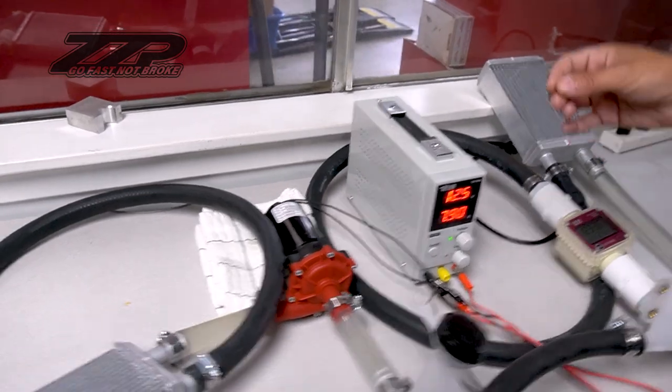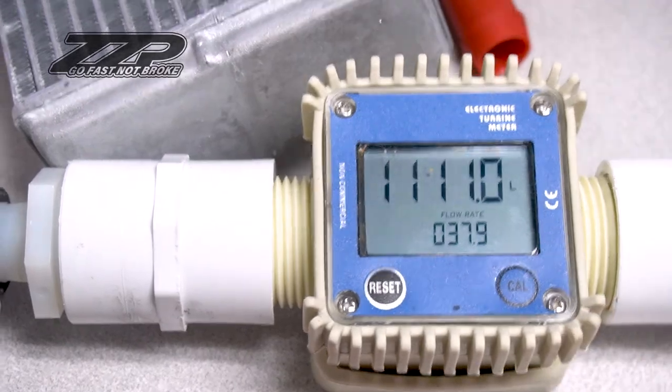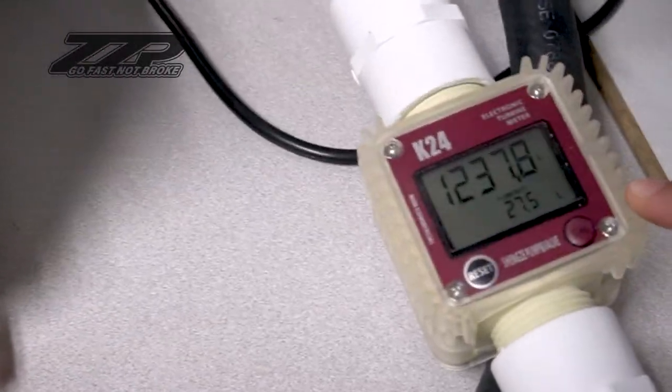If you take a look at our ZZP pump, we're at about 37.9 liters. Take a look at the Bosch. It's about 27.5 liters.